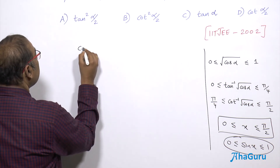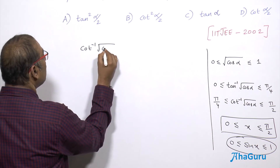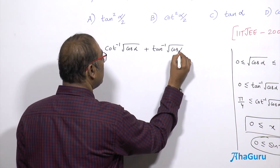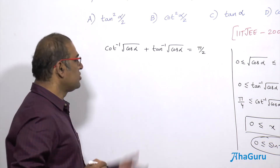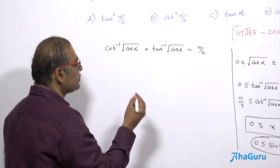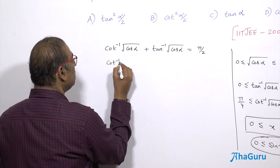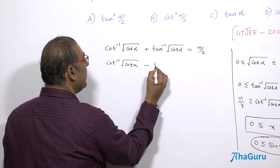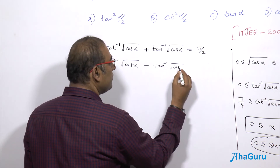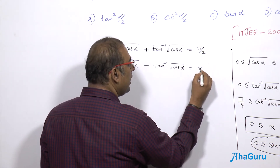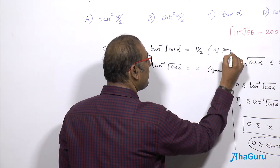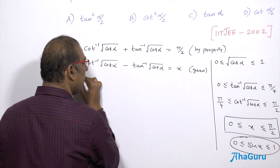We know that cot⁻¹(√cosα) + tan⁻¹(√cosα) = π/2, by the property cot⁻¹(x) + tan⁻¹(x) = π/2. The given equation is cot⁻¹(√cosα) - tan⁻¹(√cosα) = x.